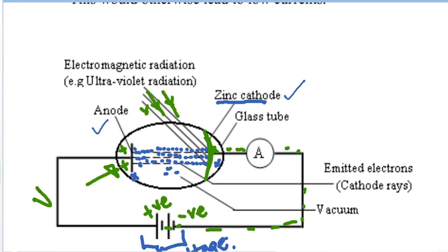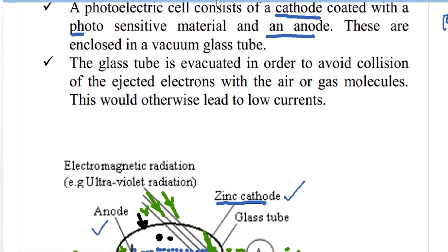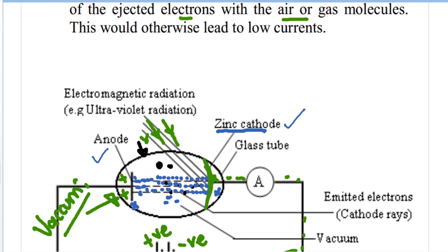A vacuum is simply a space that does not have air. The reason this device is enclosed in a vacuum is so that the electrons, as they move, do not collide with any air particles. If they collided with air particles, they would lose energy to those particles and ionization would occur inside the tube.